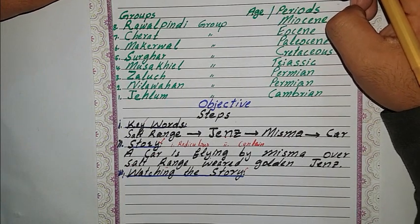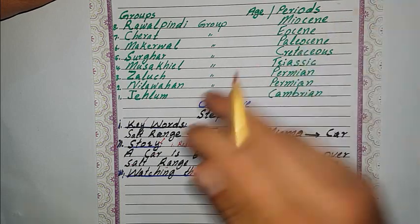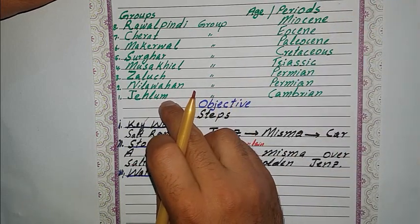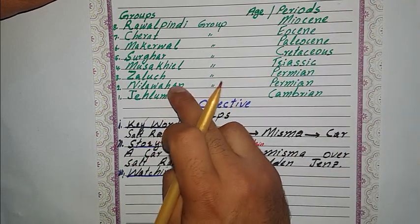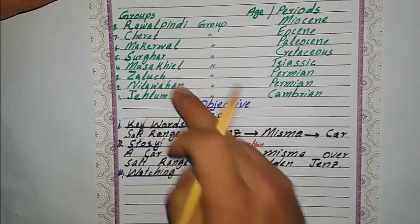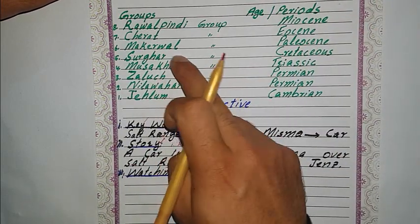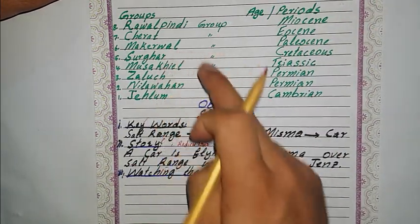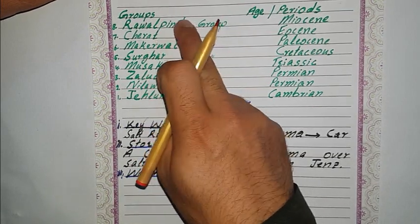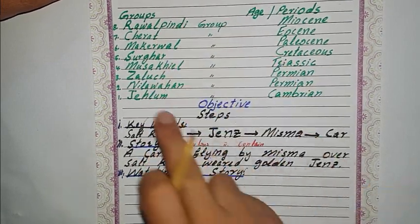There are eight stratigraphic groups in the Salt Range. These are: Jhelum group, Nilawahan group, Zaluj group, Musakhel group, Surgar group, Makarwal group, Chirad group, and Rawalpindi group.